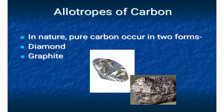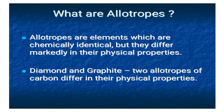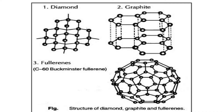The allotropic forms of carbon that exist in nature in pure form are diamond and graphite. Diamond is the hardest gemstone, while graphite is soft and is used as a lubricant. Allotropes are elements which are chemically identical but differ markedly in their physical properties. Diamond and graphite are two allotropes of carbon that can exist in their pure state.